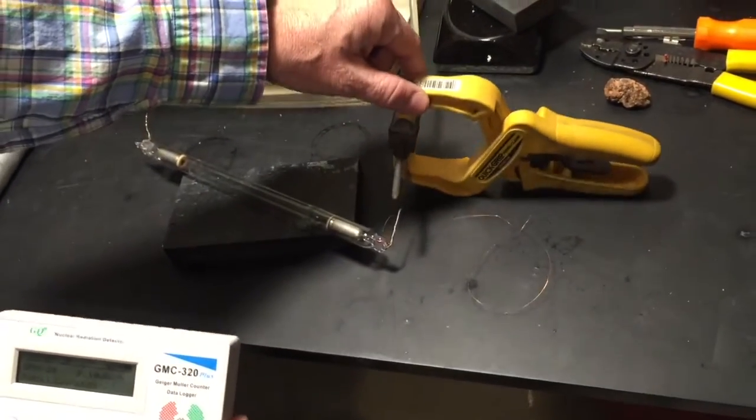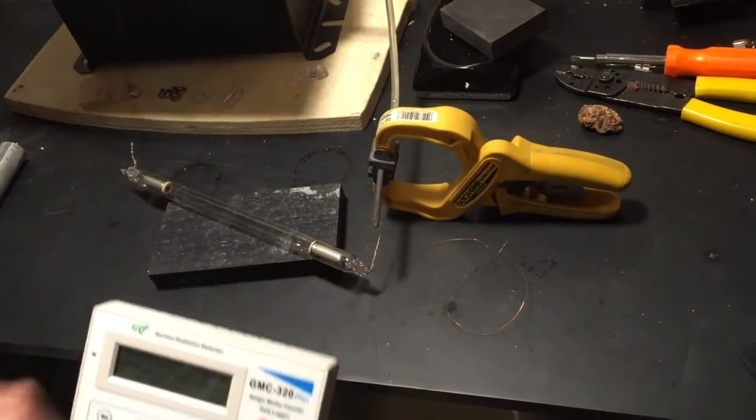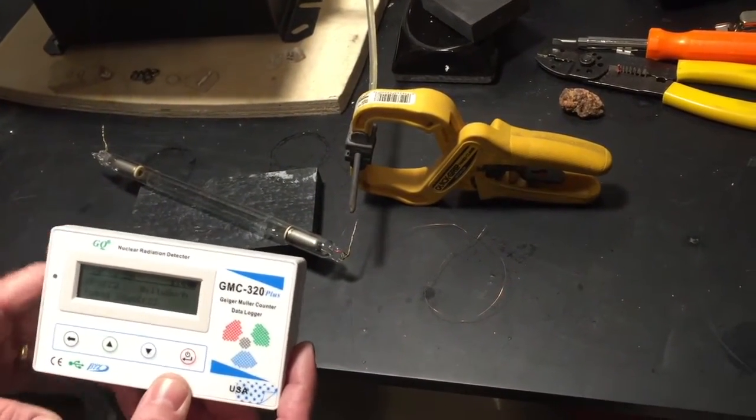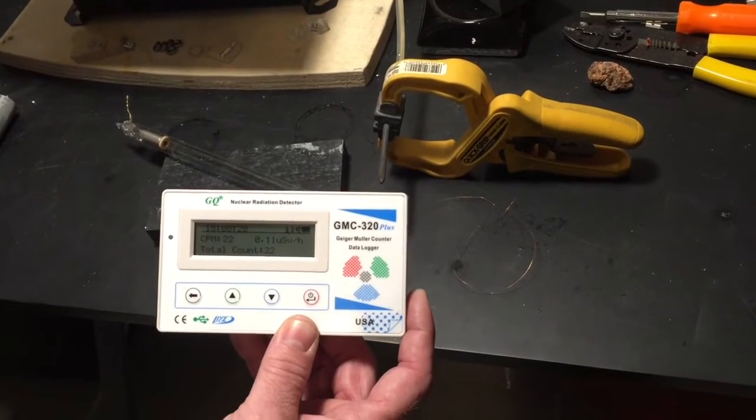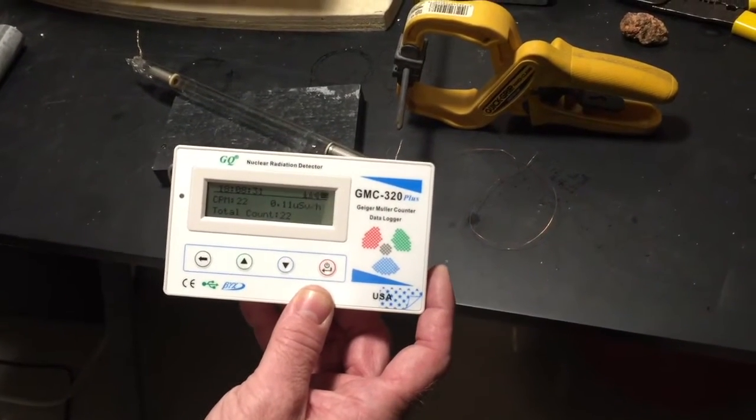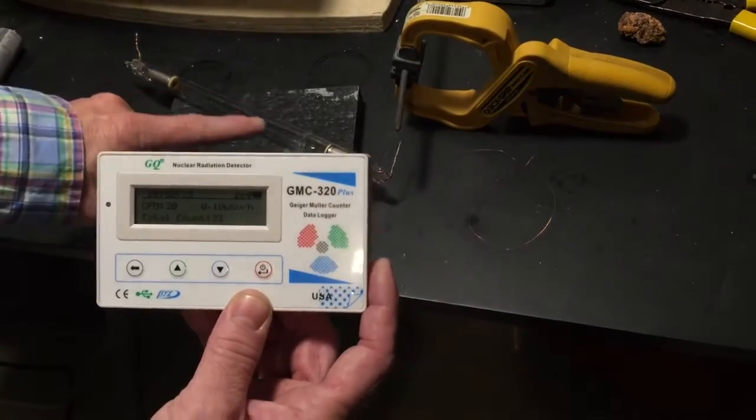And I'm going to leave a modest spark gap of approximately 1.5 inches there. I'm going to activate the spark gap and you will notice a marked difference in radioactive output from the circuit itself, still utilizing the neon tube as a substantive portion of the spark gap phenomenology.